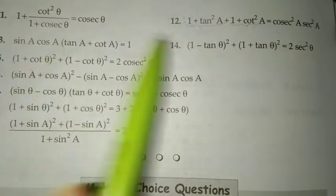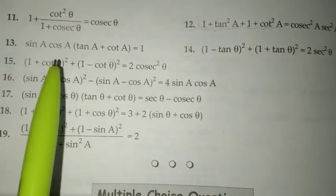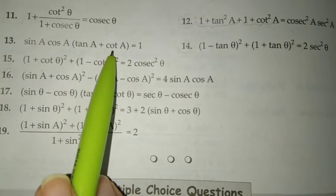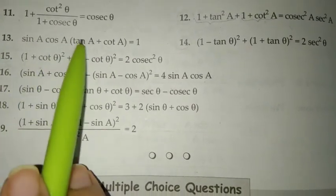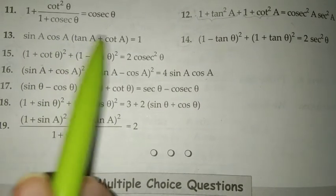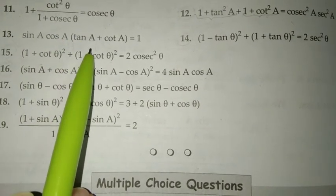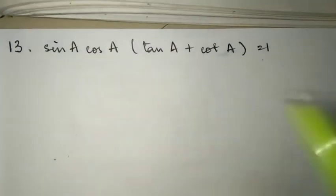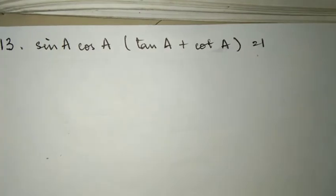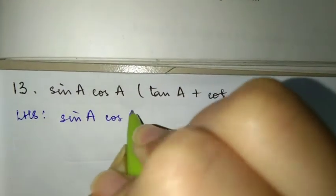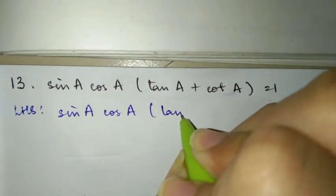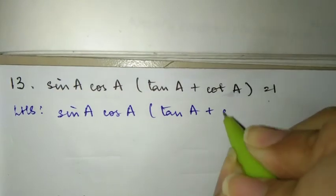Hello everyone. In this video we'll do questions 13, 14, and 15. Let's try the first one. The expression is sin A cos A multiplied by (tan A plus cot A).